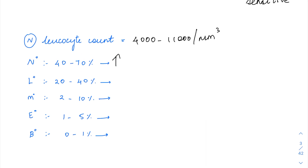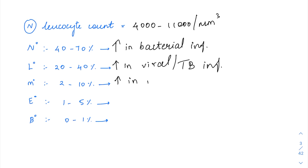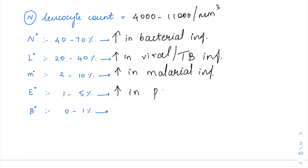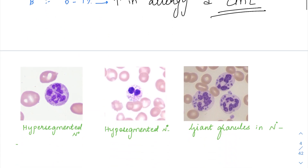Neutrophilia is going to be seen in bacterial infections, while lymphocytosis is seen in viral and tubercular infections, monocytosis in malarial infections, and eosinophilia in parasitic infections as well as allergic conditions. Basophilia is seen in allergy and also in CML — the most important thing in CML is to look for basophils.